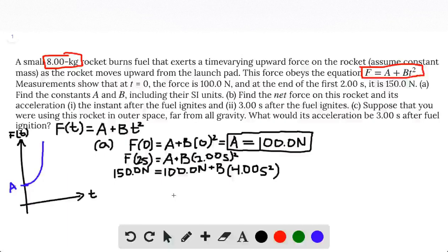We can now go ahead and do math to this. Subtract 100 newtons from both sides, divide both sides by 4 seconds squared. And then at the end of the day, to three significant figures, get a value of 12.5, and it's going to have wacky units, newtons per square second. That is part A.